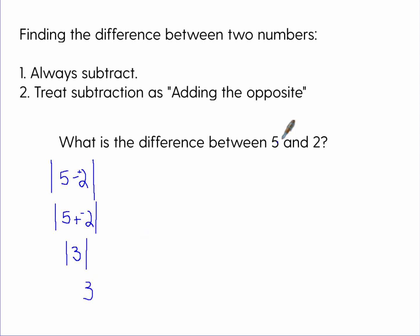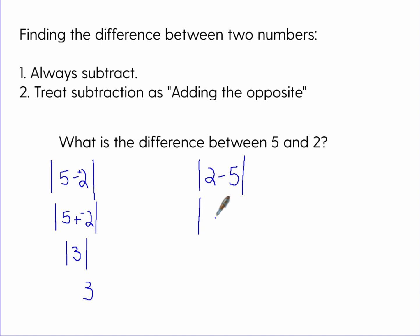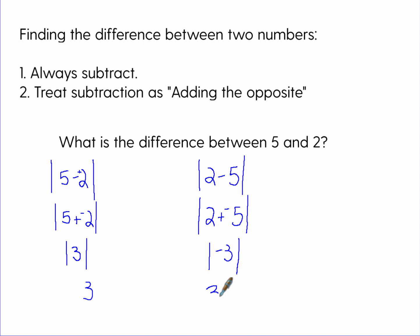As you know, the difference between five and two is three. What if we do it the other way — two minus five? We again treat subtraction as adding the opposite: two plus negative five gives us the absolute value of negative three, and the absolute value of negative three is just three.